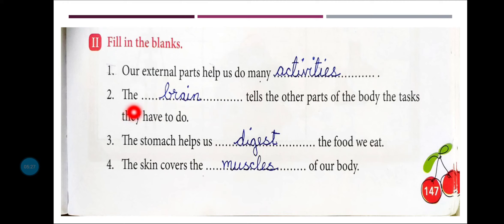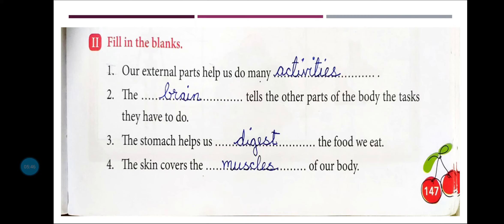Number two: 'The ___ tells the other parts of the body the task they have to do.' Answer: brain. हमारी body के सारे parts को brain message पहुँचाता है कि तुमको यह काम करना है। अगर हमको कोई काम करना है, तो पहले वो message हमारे brain तक जाता है, और फिर brain वहाँ से दूसरे parts को message देता है कि हमको यह activity करनी है।